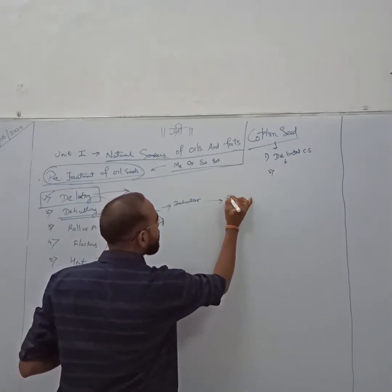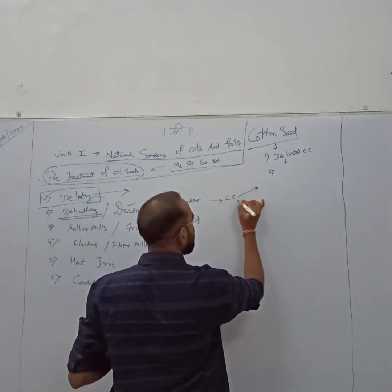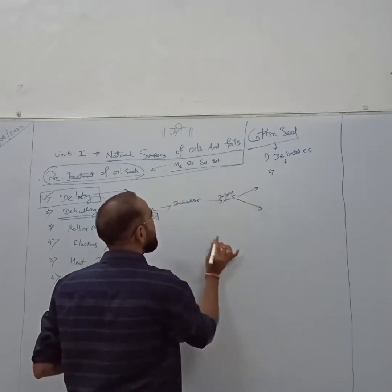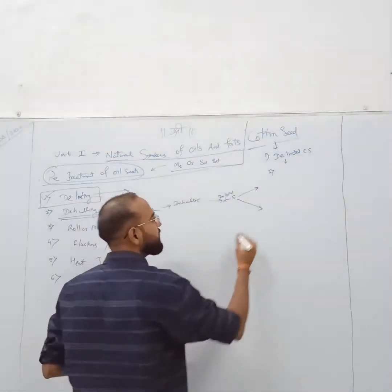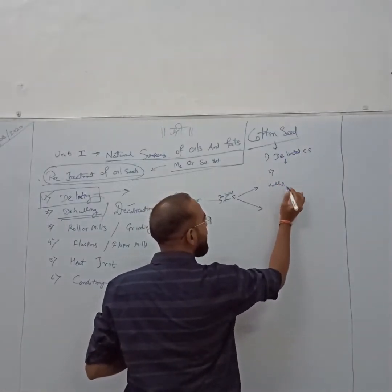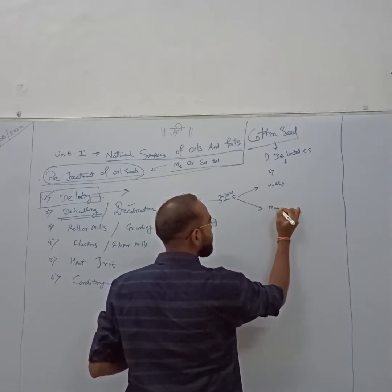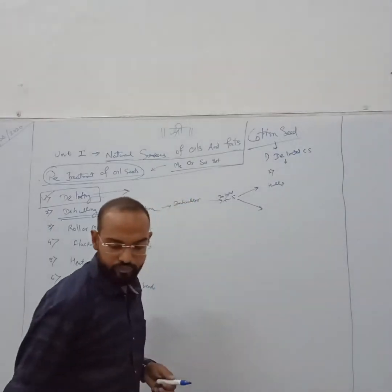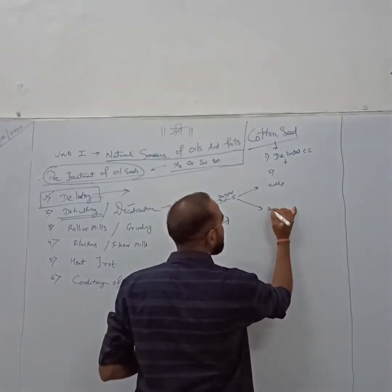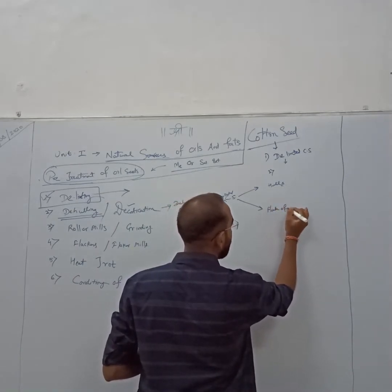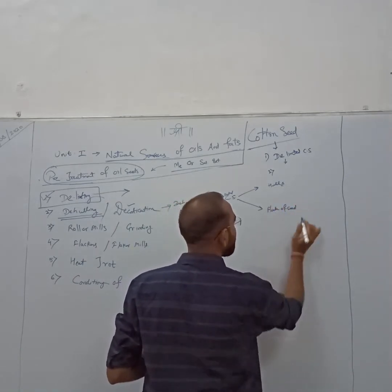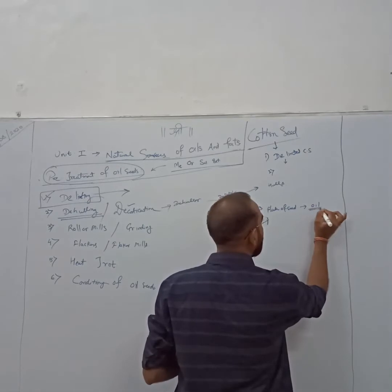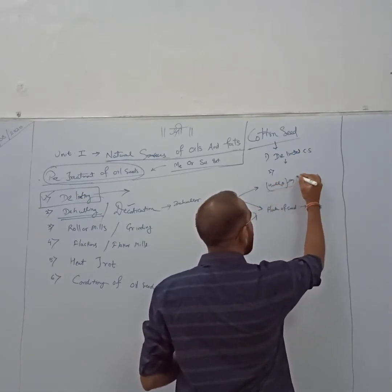Now our delinted cotton seed is broken into 2 parts. That is one is hulls and second one is flesh. Flesh or kernels is our main product to extract the oil. Hulls is again a byproduct.